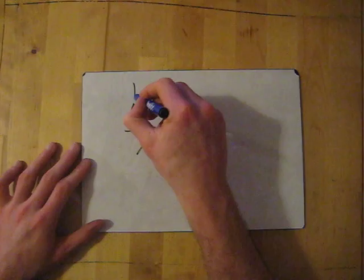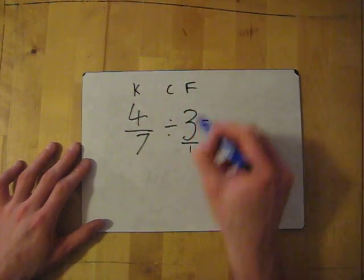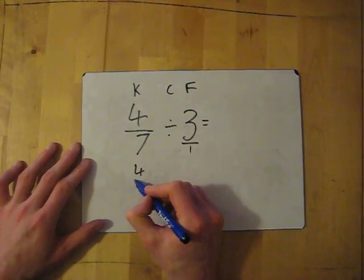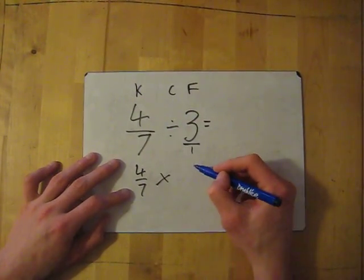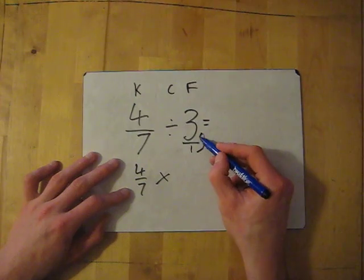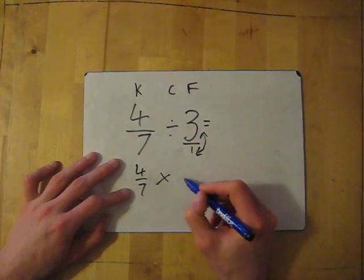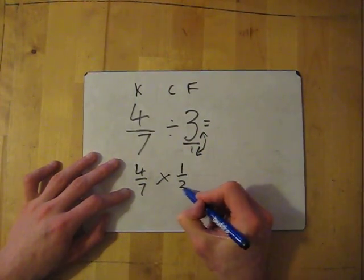Then I KCF. Keep this fraction exactly as it is. Change, change the divide to multiply and flip. So the bottom number goes to the top and the top number goes to the bottom. So it will be 1 over 3 now.